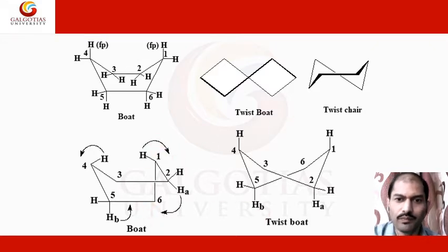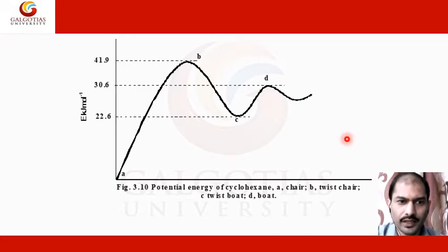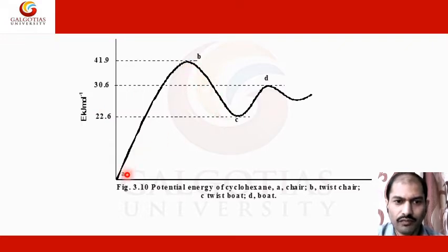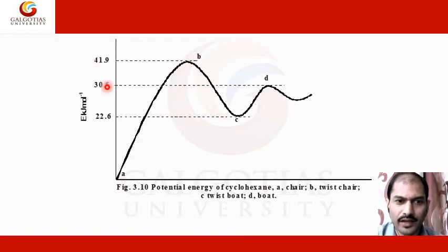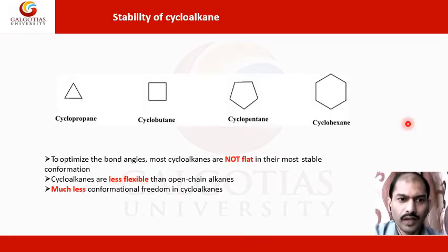Looking at the potential energy graphs of cyclohexane, we can see how energy changes across different forms: chair form, twist boat, twist chair, and boat form. The highest energy is found in the half chair form, meaning it is very unstable — having very high energy indicates instability in that particular form.